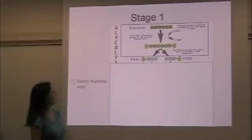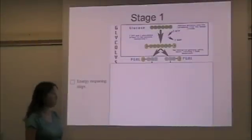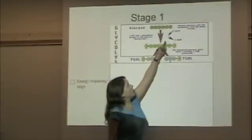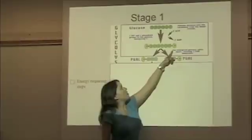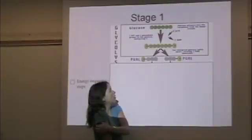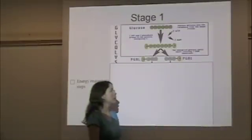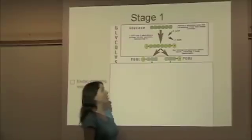Here we see the energy requiring steps. We have six-carbon glucose, which comes in to the cytoplasm. It combines with two ATP and you can see that two phosphates are added on either end of the glucose molecule. As the ATP breaks down, it creates two ADP molecules — adenosine diphosphate.